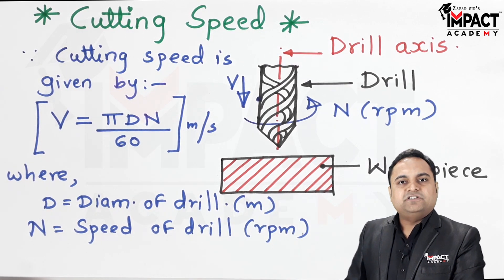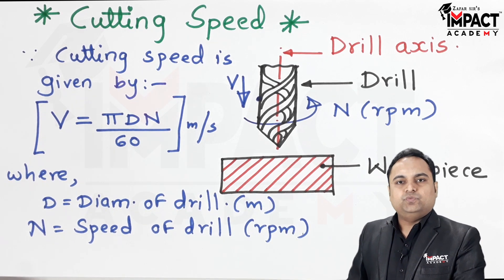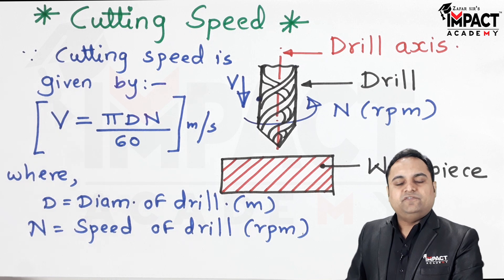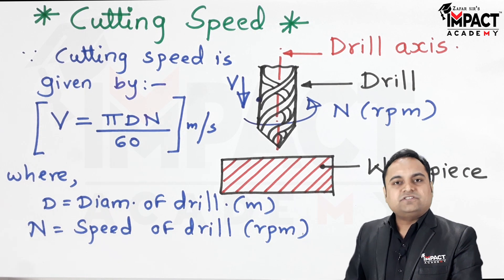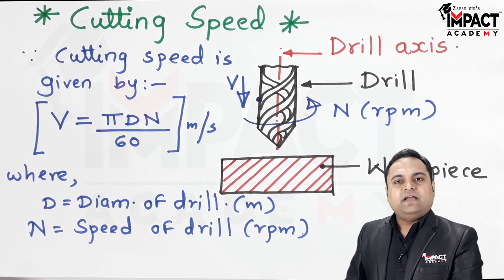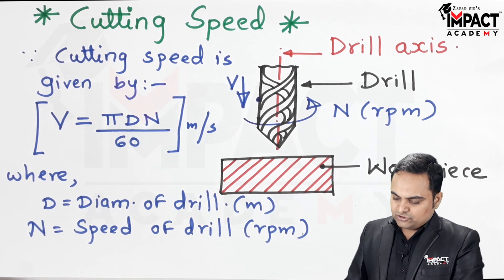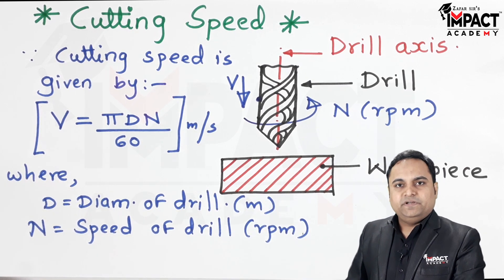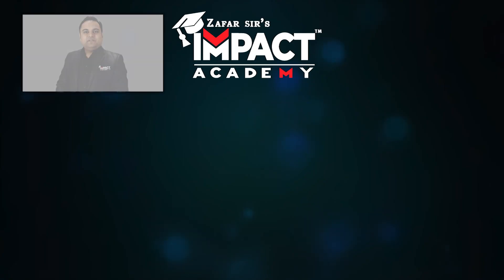The cutting speed also depends upon the type of surface finish required. For a smooth surface finish we have to keep the speed slow, and for high speeds the finish would be rough. So in short, that was an explanation regarding cutting speed in the case of drilling machines.